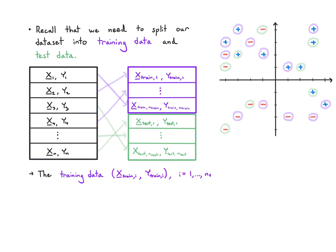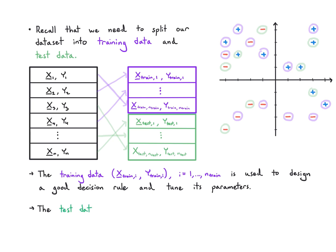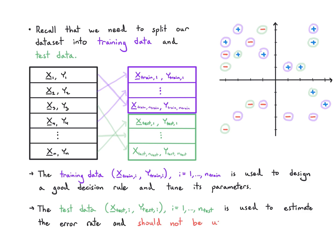The training data is used to design our decision rule — we want to come up with a good decision rule using only the training data and can also select and tune parameters using it. The test data is there to mimic what's happening in the real world, to estimate the real-world error performance or error rate. It cannot be used for parameter tuning or any kind of decision rule optimization.